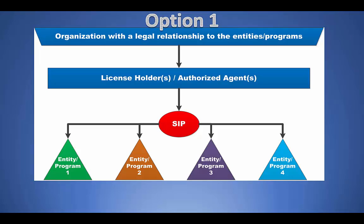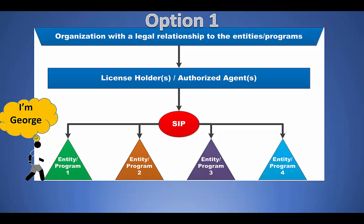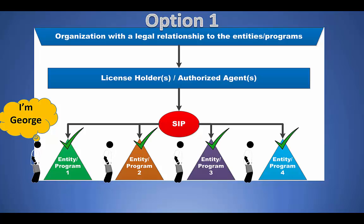Under option one, a single SIP is responsible for all entities under an organization's structure. The organization's authorized agent or agents designated a single person as a SIP for each of the four entities. To illustrate how this structure affects an organization's ability to transfer employees across its entities, let's examine which of the four entities that an employee with a cleared background study, like George, could provide services for without each entity having to submit a new background study. Entity Program 1 submitted the background study for George, so George can work for Entity Programs 1, 2, 3, and 4. Thus, with one SIP for all the organization's entities, George may provide services at any of the organization's four entities.